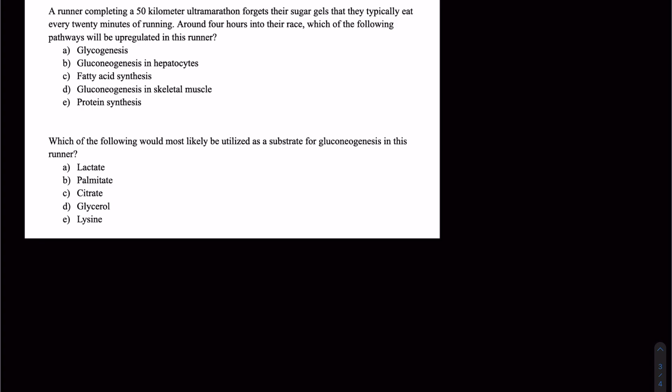So the first question here, we have this runner completing an ultramarathon. Obviously, we're using a lot of energy here, and a lot of that is going to be in the form of glucose. We're going to be using a lot of glucose to run through the process of glycolysis, which lyses glucose into two pyruvate molecules. And those are going to be run through the Krebs cycle to make NADH, which is going to supply electrons for electron transport chain to ultimately make ATP that our muscles are going to use.